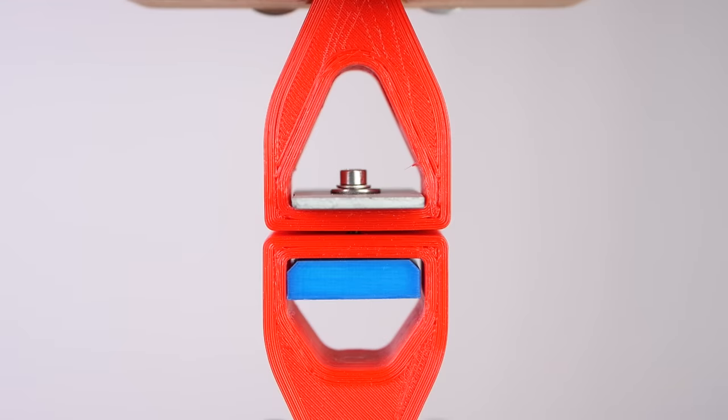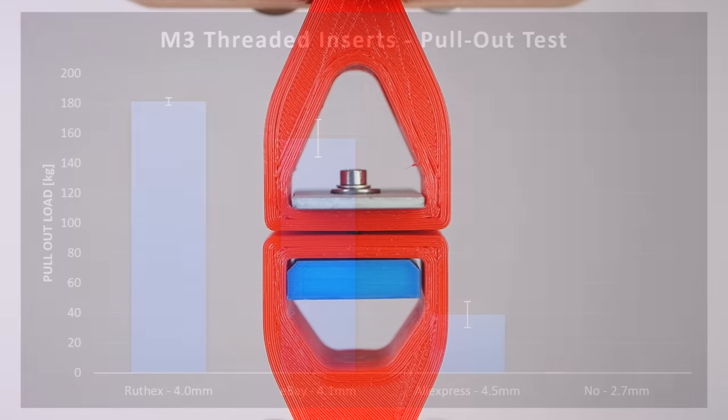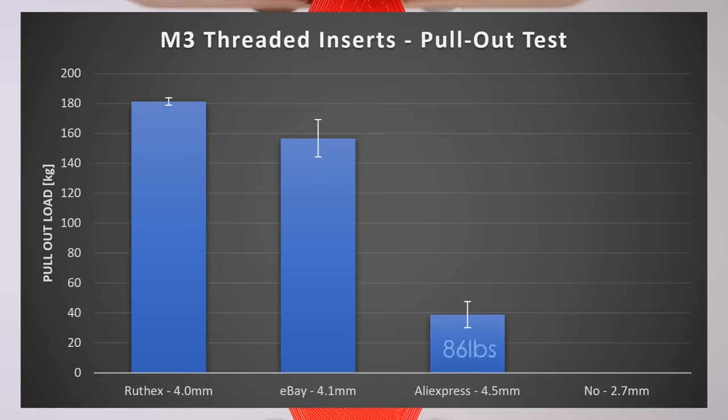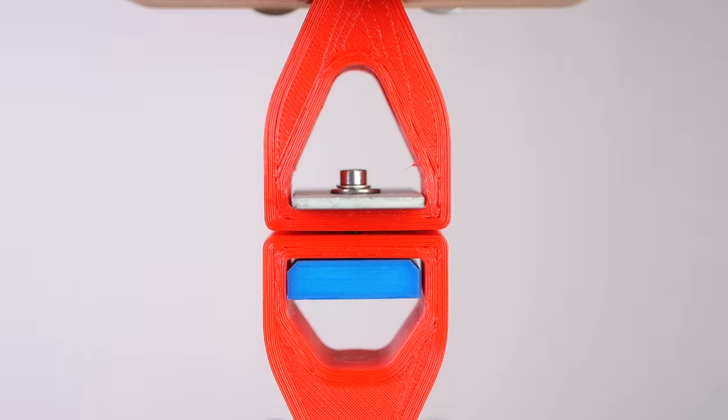Let's now get to the cheap injection molding inserts. These seriously disappointed and were easily pulled out at 139kg on average. Something lots of you mentioned in the comments of the last video.